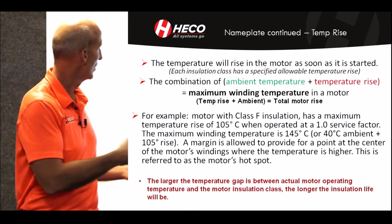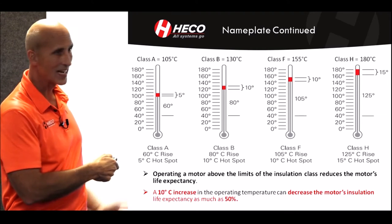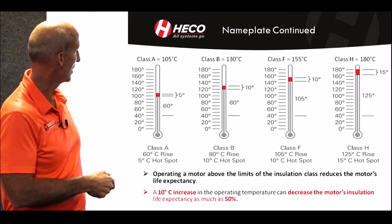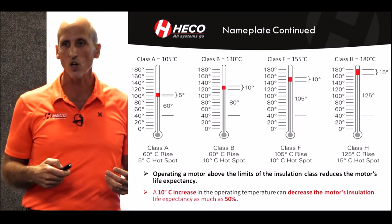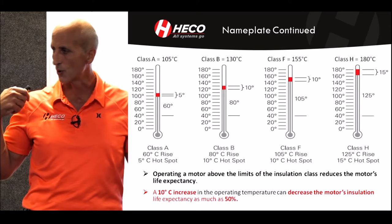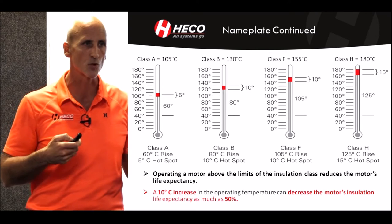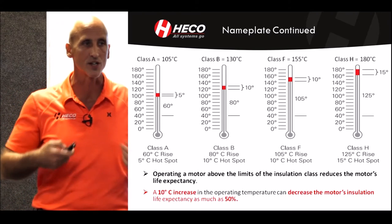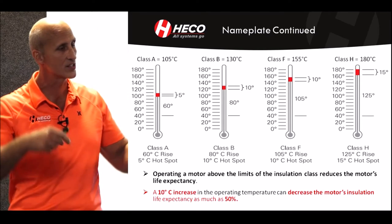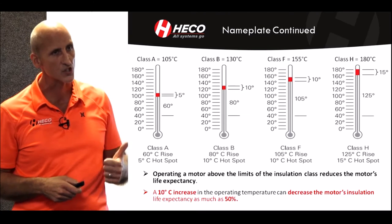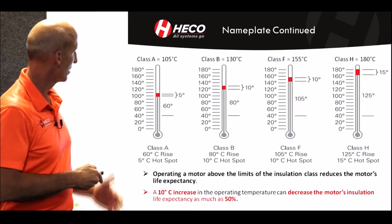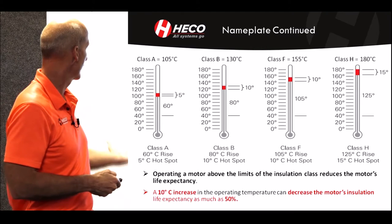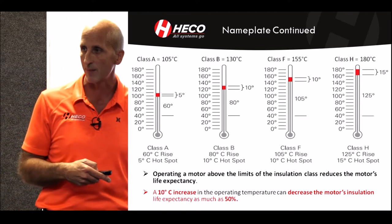This shows how NEMA defines that gap—the hot spot temperature. On a class H, they're giving about a 15-degree margin. One opportunity I look at when rewinding motors is to improve that margin. With many designs, we can actually improve it by increasing the copper cross-sectional area. Increasing the copper cross-sectional area causes the temperature to go down and also slightly increases the efficiency. For every 10 degrees C increase in temperature, you decrease the winding life by 50%.